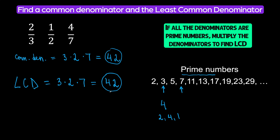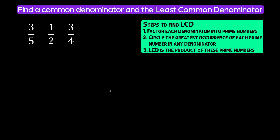Let's look at another example. We have these fractions: three-fifths, one-half, and three-fourths. To find the common denominator, we are going to just multiply the denominators. Five times two times four — five times two is ten, times four is forty.